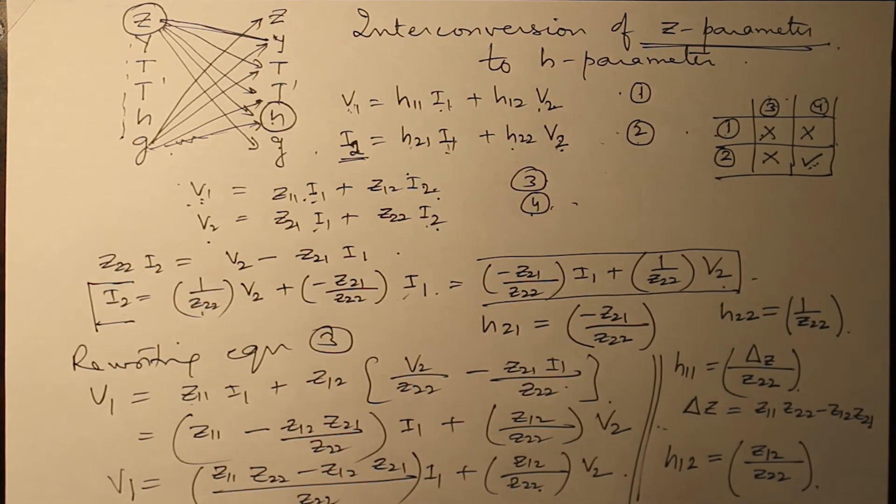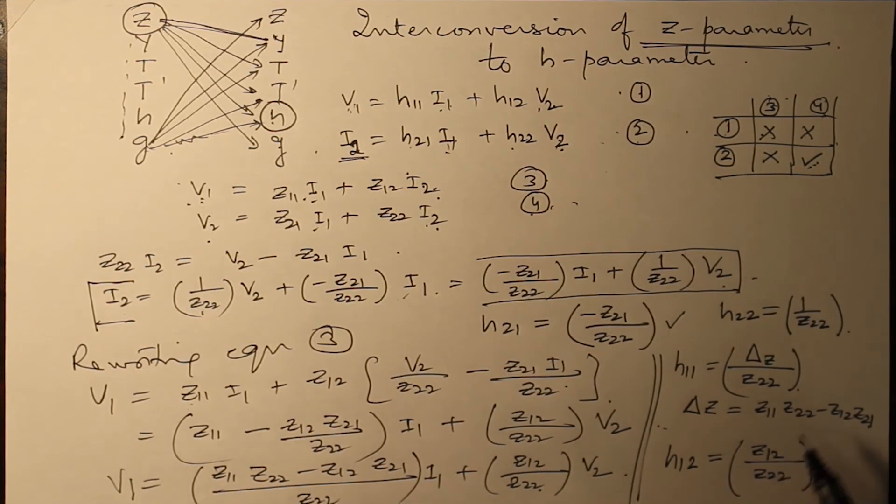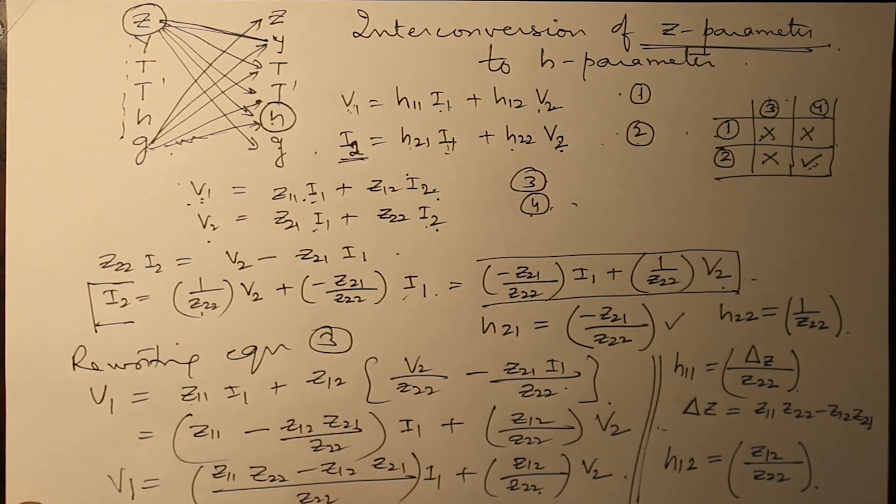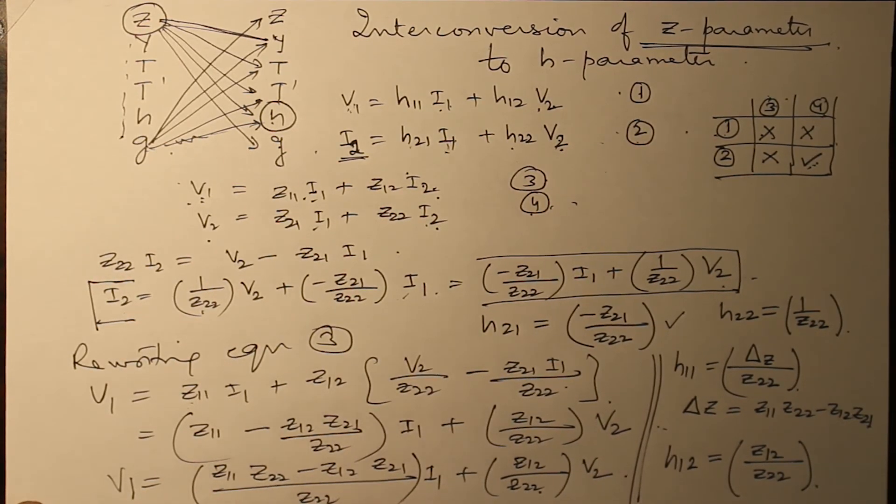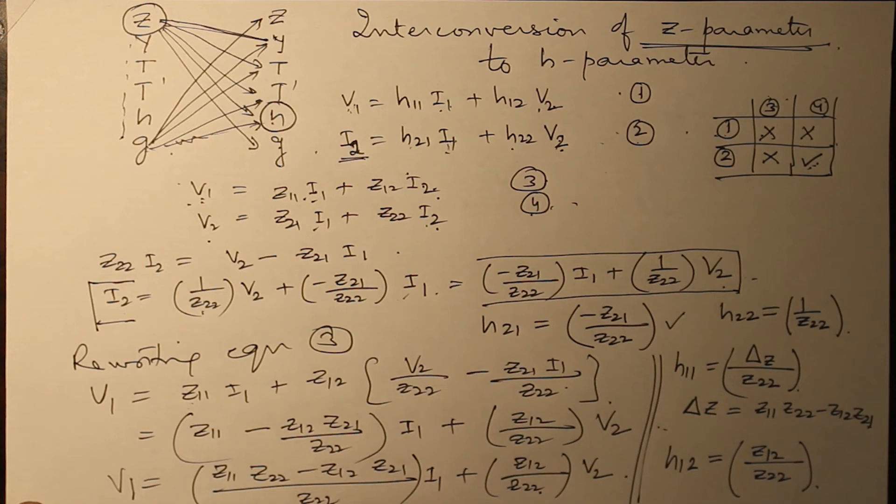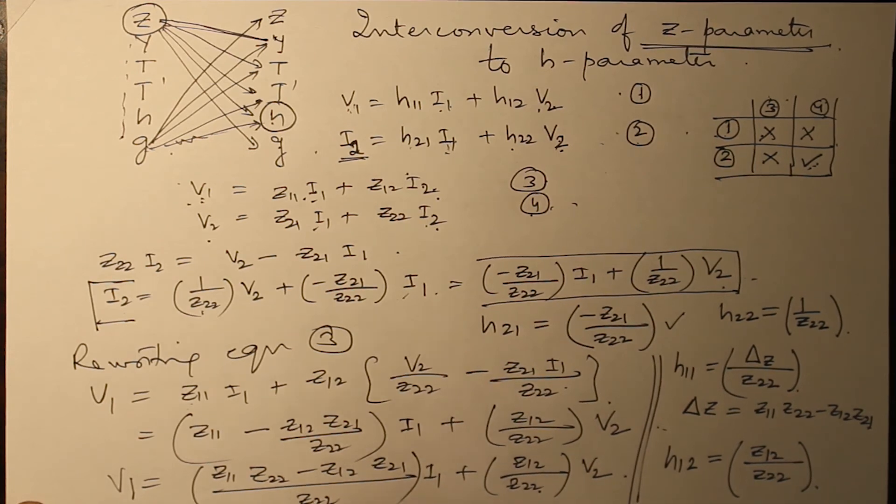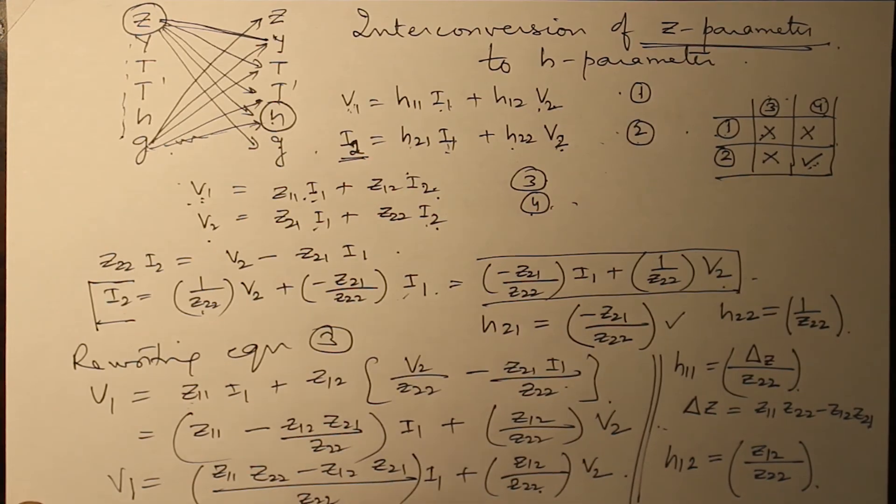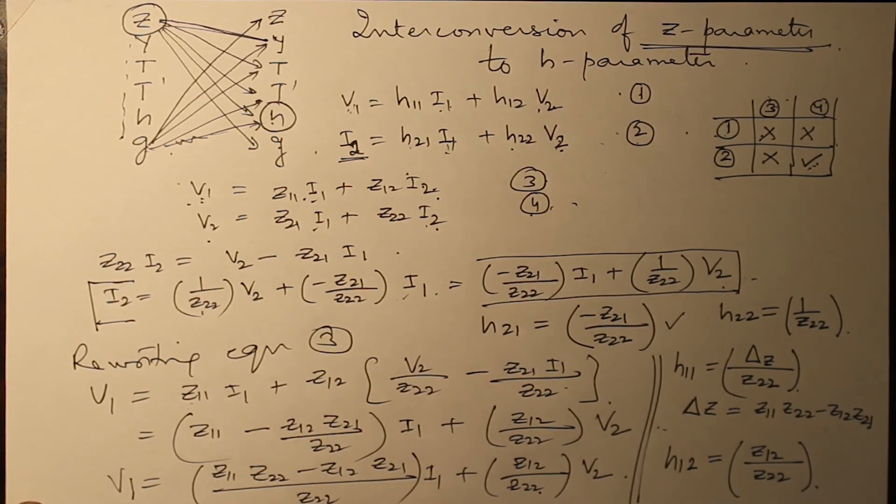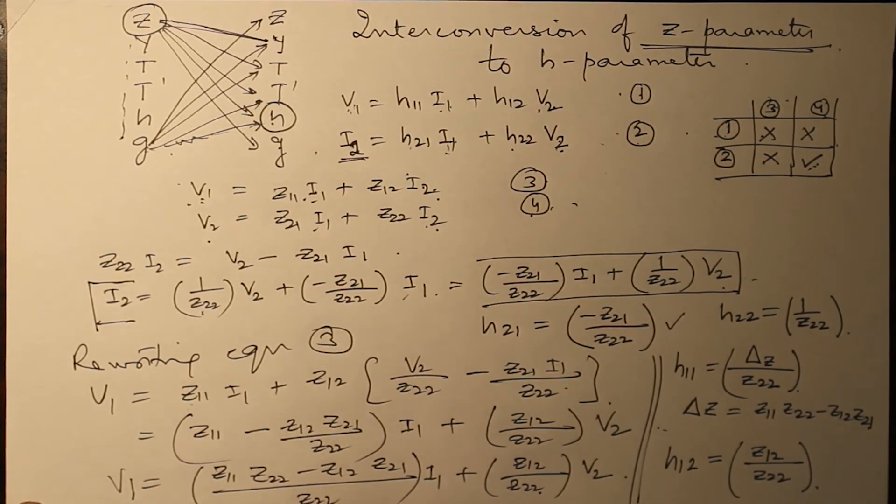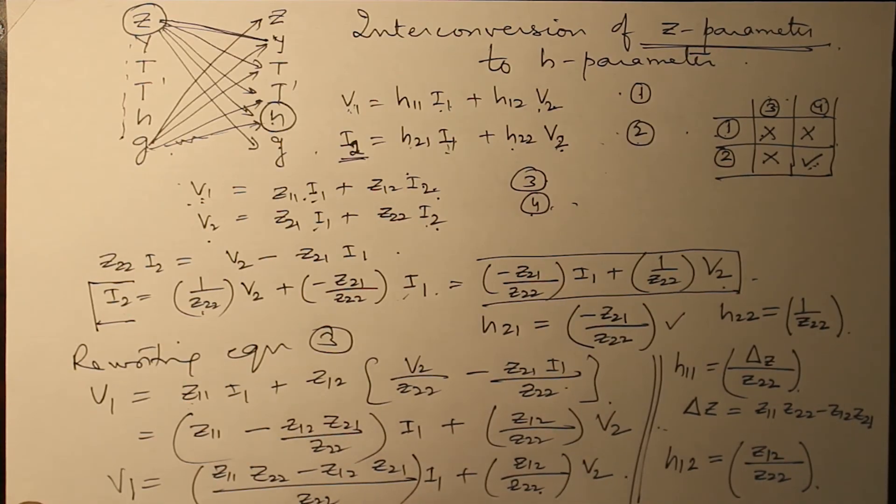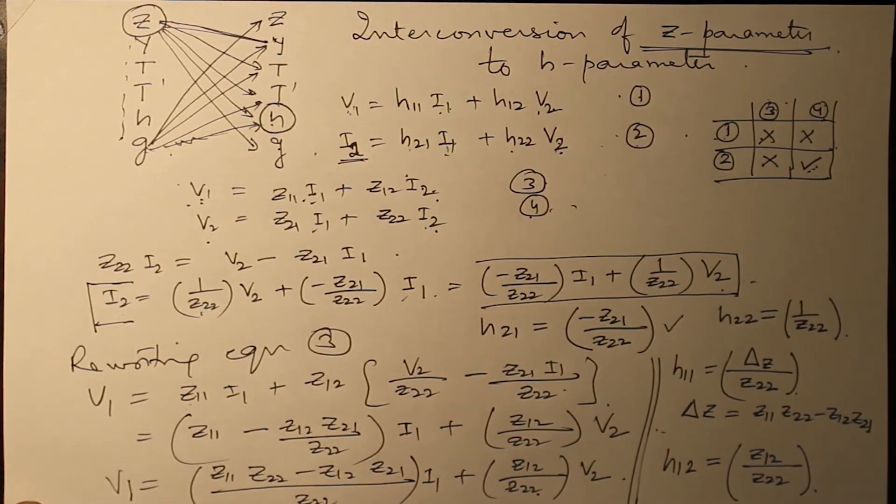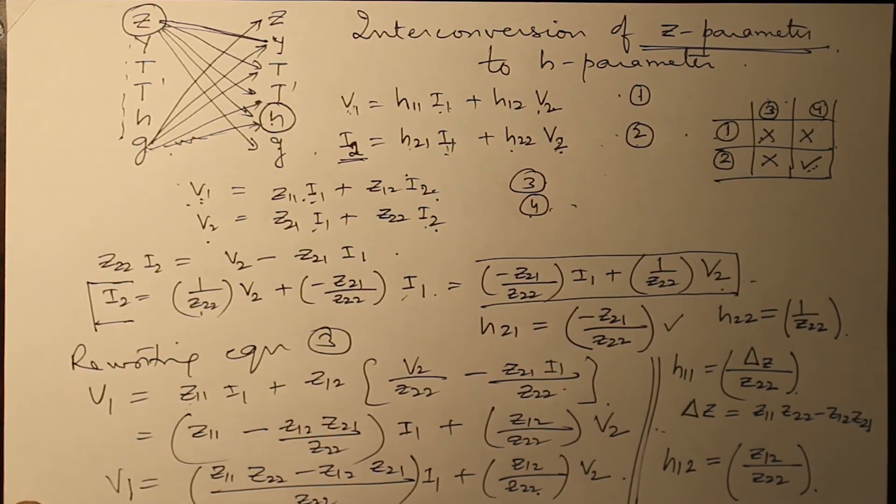So we have obtained all these four values. H we can write it down in this form: delta Z over Z22, H12 Z12 over Z22, H21 as minus Z21 over Z22, and the fourth one, one over Z22. H parameter in terms of Z.